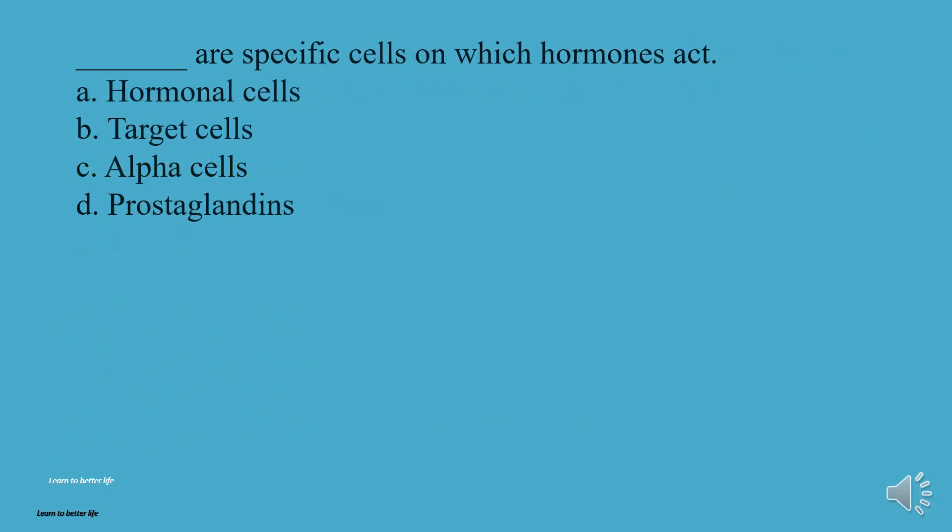What are specific cells on which hormones act? A, Hormonal cells. B, Target cells. C, Alpha cells. D, Prostaglandins. The answer is B, Target cells.